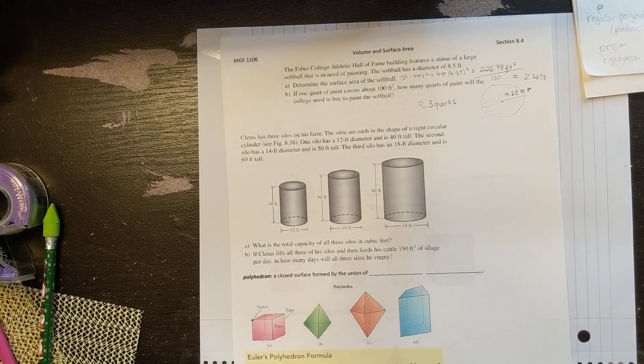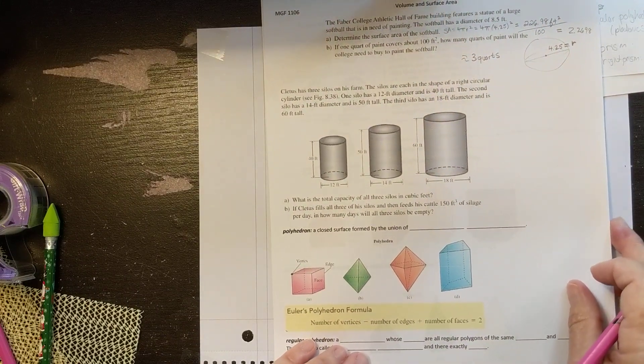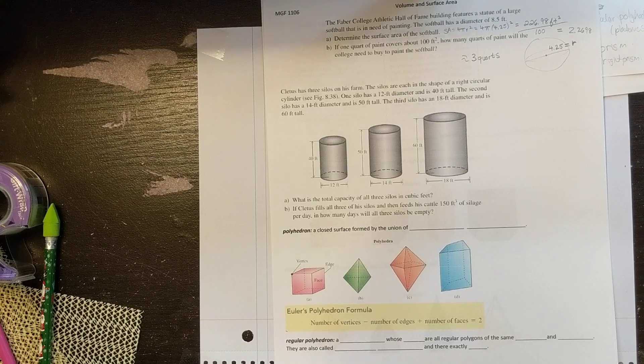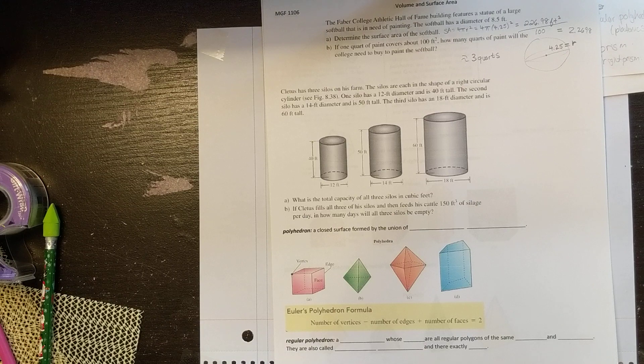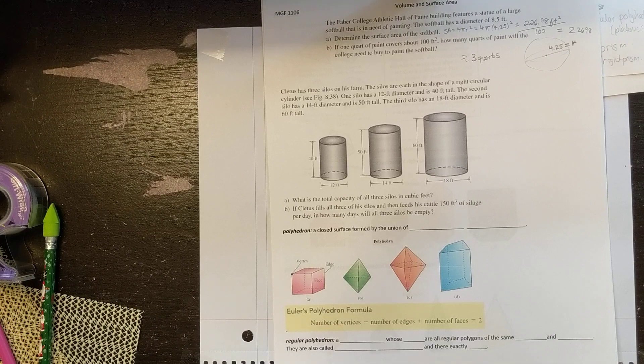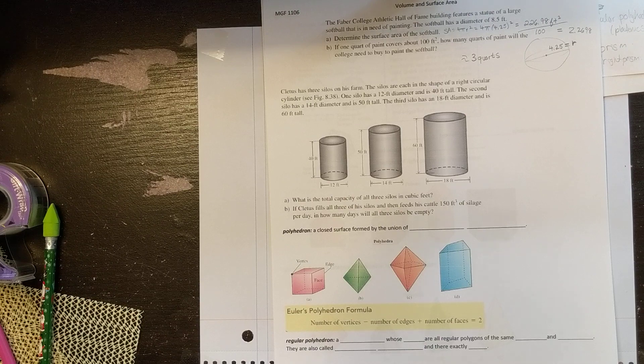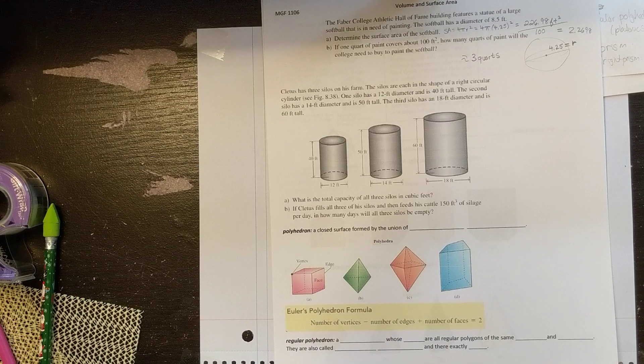Here's another good example. I love the name. Cletus has three silos on his farm. The silos are each in the shape of a right circular cylinder. One silo has a 12 foot diameter and is 40 feet tall. Another one is 14 feet diameter and 50 feet tall. And the third is 18 feet diameter and is 60 feet tall. What is the total capacity of all three silos in cubic feet? So what we're going to do is add the volume of each of these together.